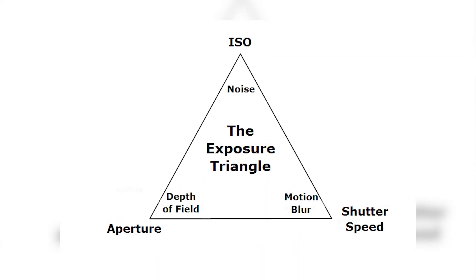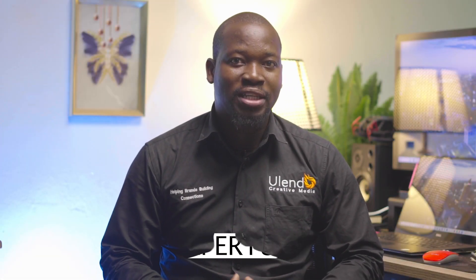These settings are the building blocks of photography and can greatly improve your images when used correctly. So let's begin. First up, let's talk about aperture. Aperture refers to the opening in the lens that lets light into the camera.